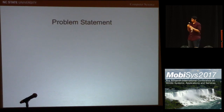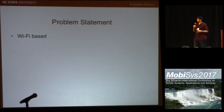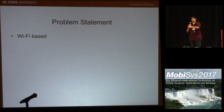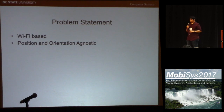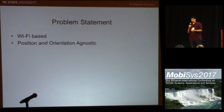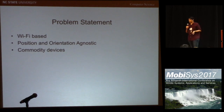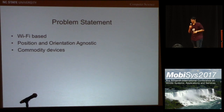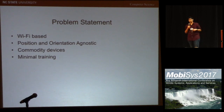This brings us to our problem statement. We want to build a system that is first based on Wi-Fi, which can traverse walls and reach any part of your room. Secondly, we want to make it independent of the position and orientation of the user — from now on we can call position and orientation together as the configuration. It should work for commodity devices without any hardware modifications, and most importantly, it should require minimum training from the user so that users can actually adopt these systems.